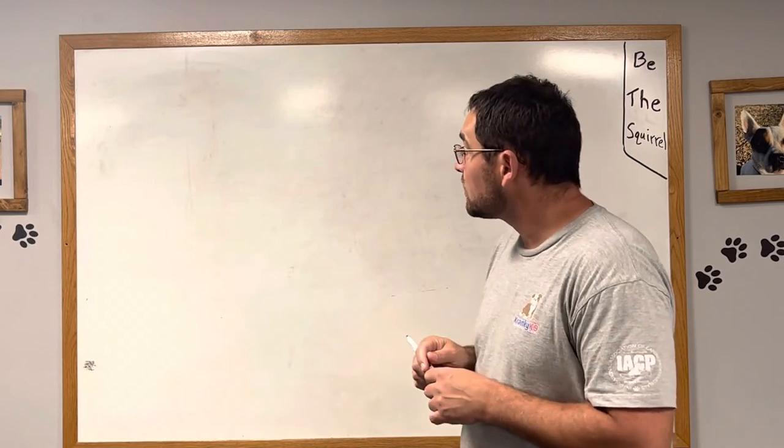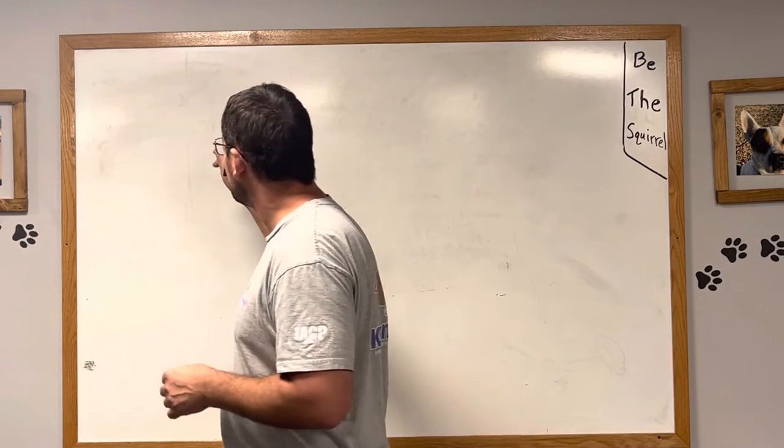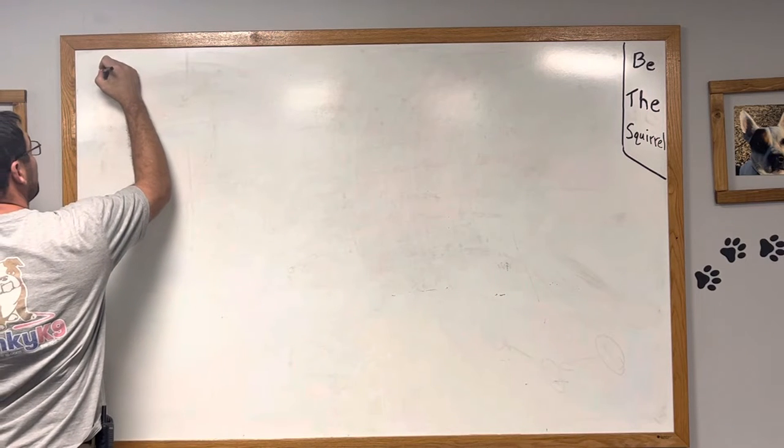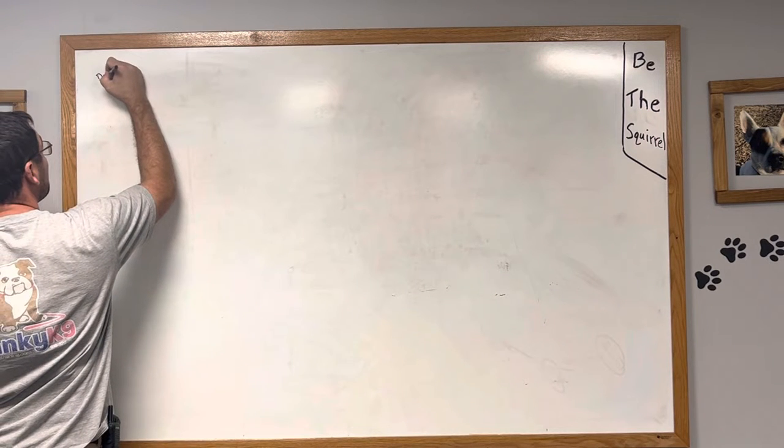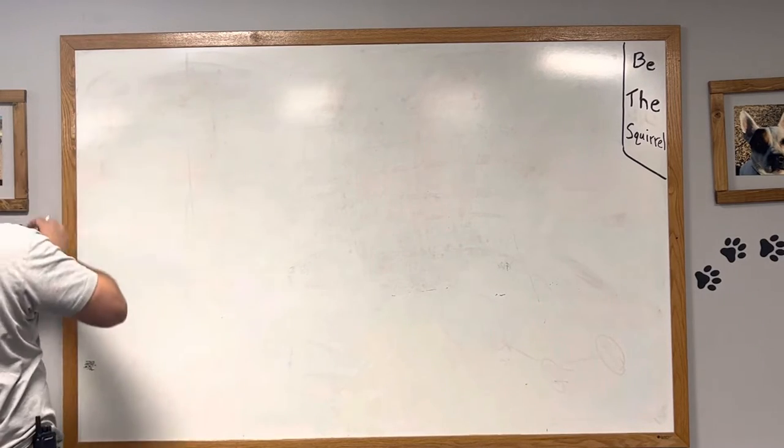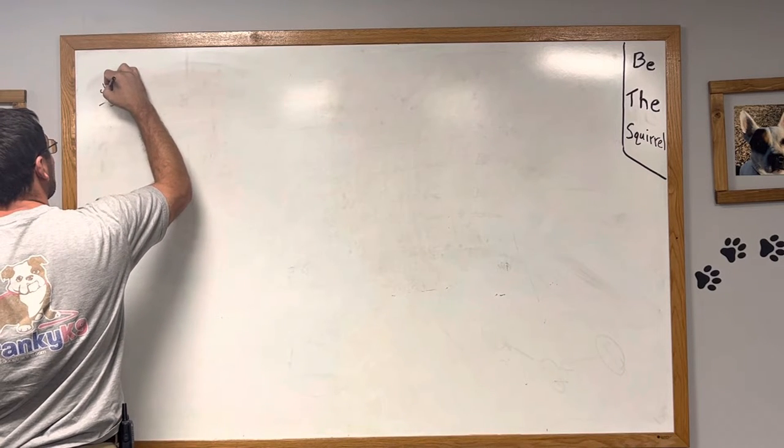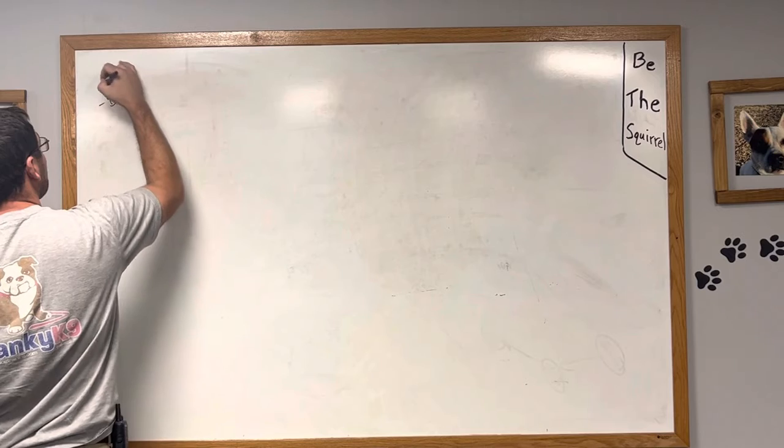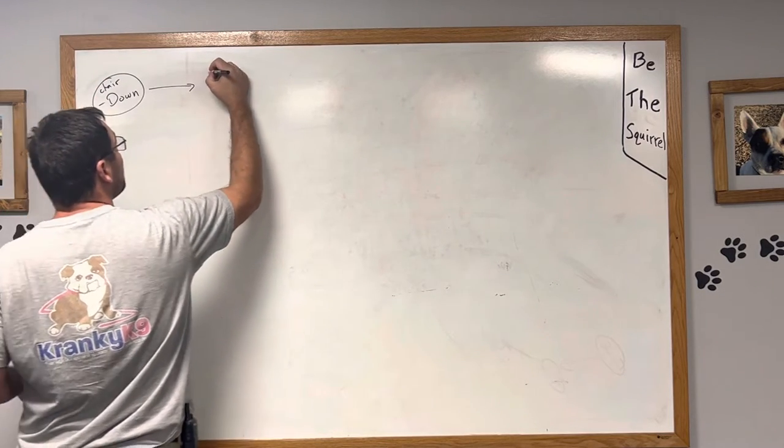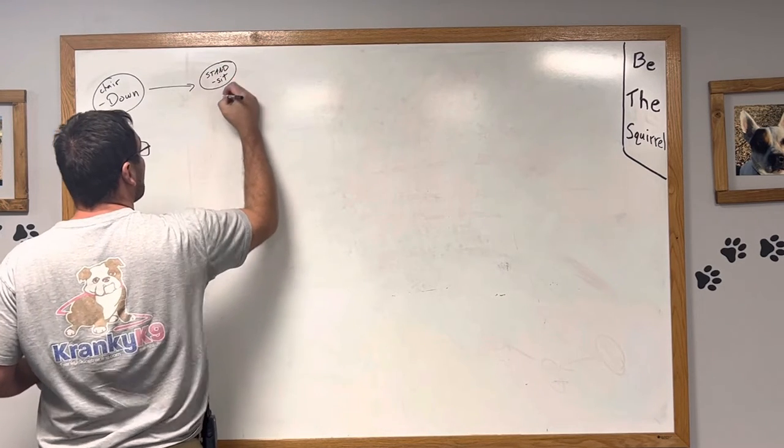I'm gonna go ahead and draw our stations up here for you. So last week we had you do the down, and you were to sit in a chair for that. That's probably a little small for our camera. The cue there was the human sitting down in the chair. Then we had the human standing, and that was the cue for the dog to sit.